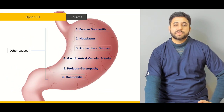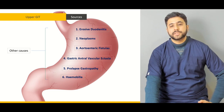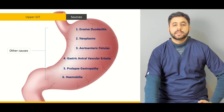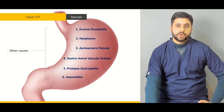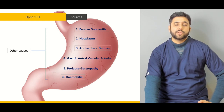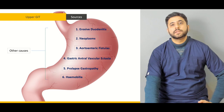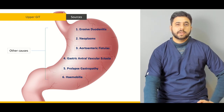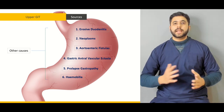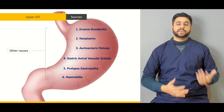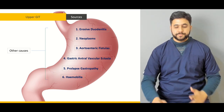Going forwards, some of the common causes of the upper GI bleeding are going to be discussed. Some of the uncommon causes are also going to be discussed. We are going to discuss their presentation in slide details, and what are the different clinical points in history that can help us differentiate one cause from another.